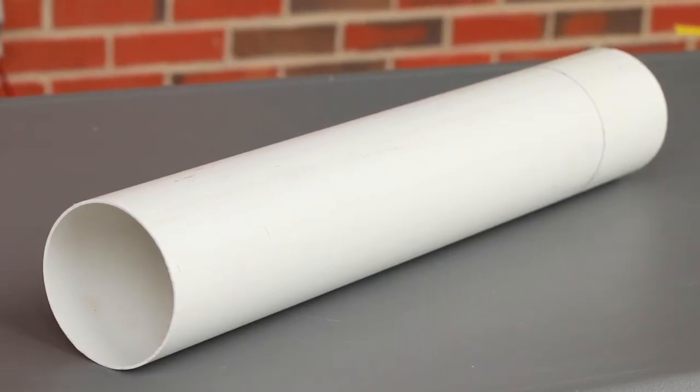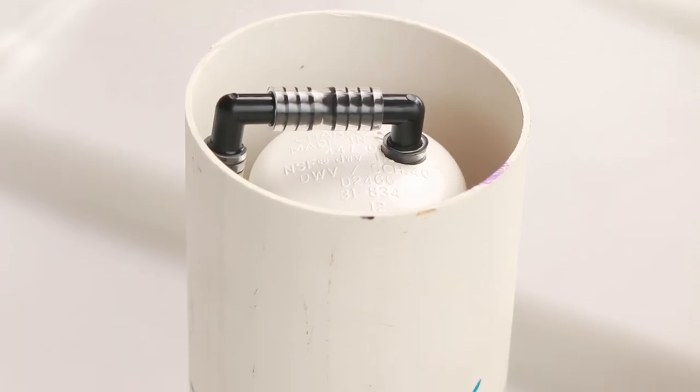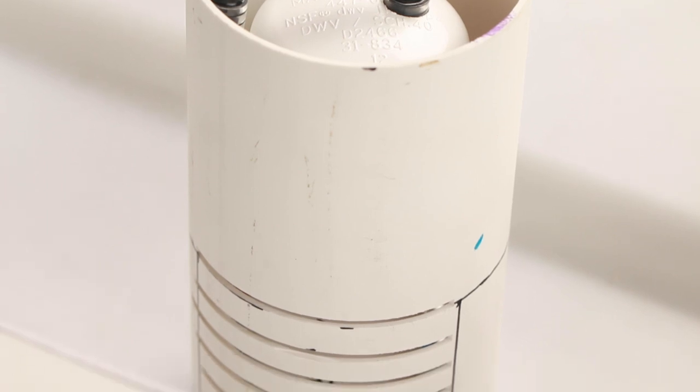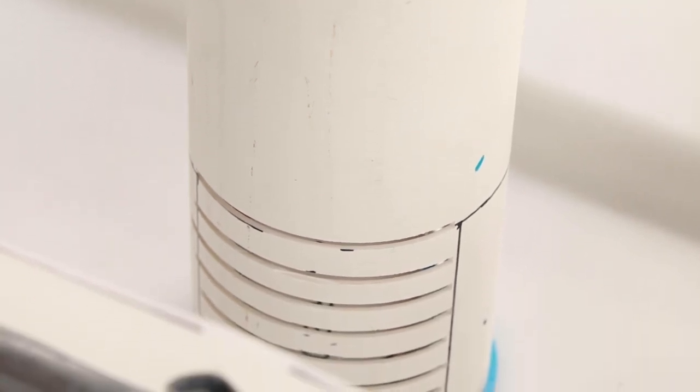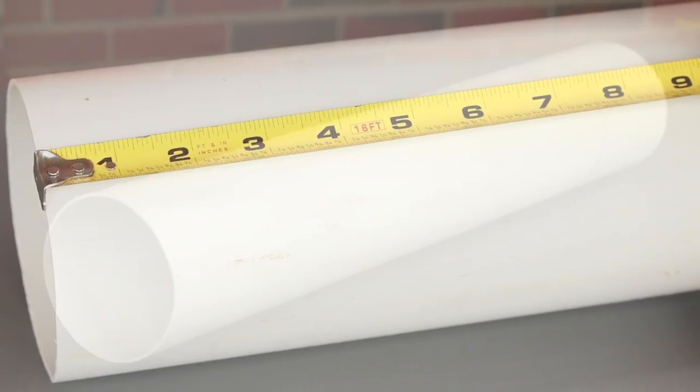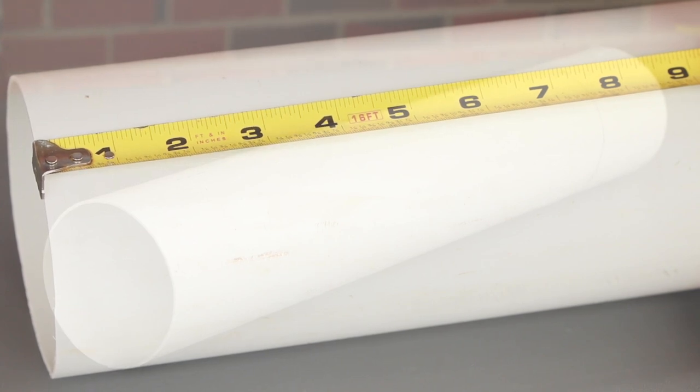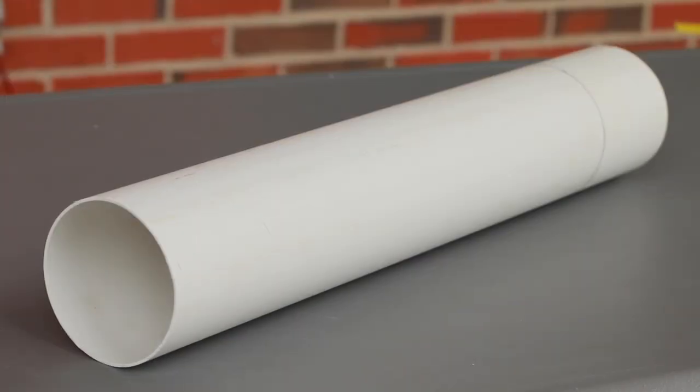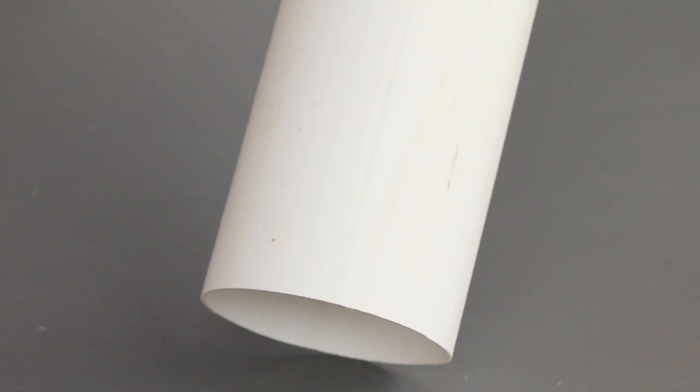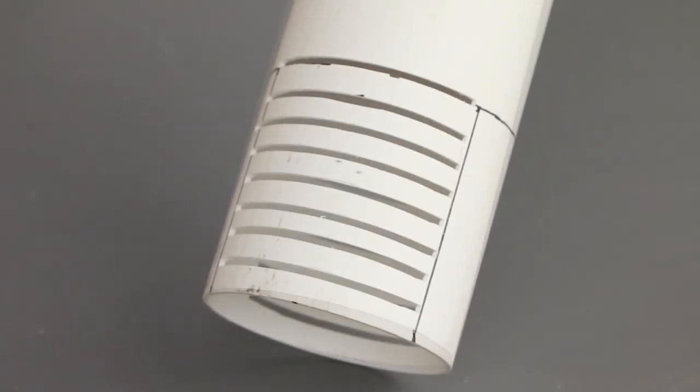Start with the 4-inch pipe. This pipe is the sleeve that protects the bell siphon and keeps the grow bed media from interfering with the bell siphon action. The final length of this sleeve will be 8 inches, but we suggest that you start with a 2-foot long section, so it will be easier to hold when cutting slits in the side.